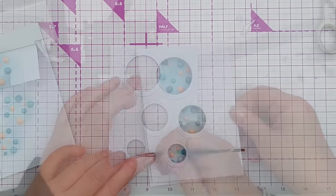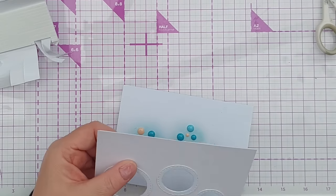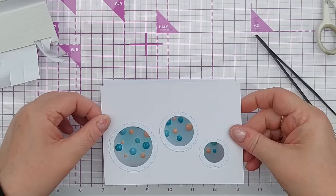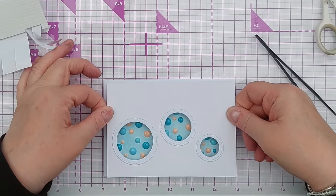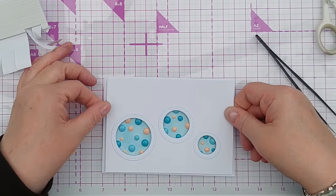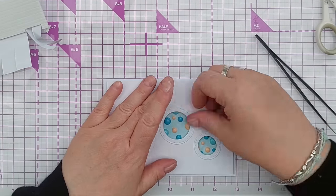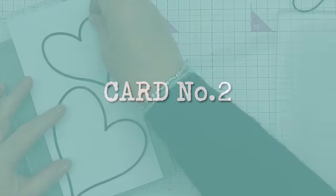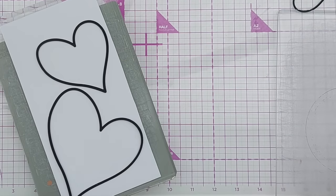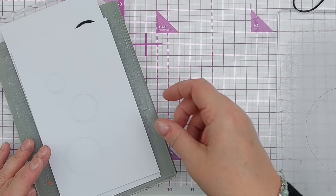Once that was all in place, I added some foam tape to the back of the panel and stuck this to my card blank. Obviously at this point the card still needs finishing, but I decided to set it aside and work on my second card.